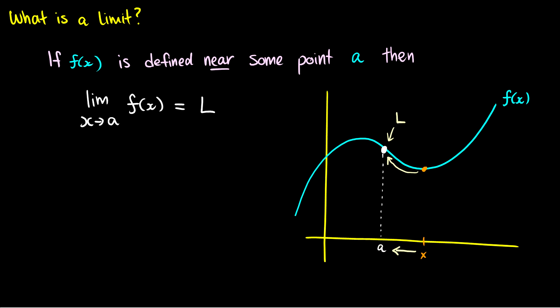Similarly, if we do this from the other side — let's say we have another x on the left moving to the right towards a — then that point on the curve is also going to move towards our limit L. And this is what a limit is.